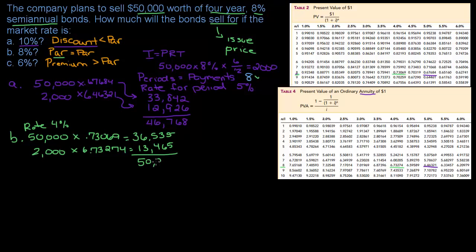Multiplying $2,000 by 6.73274 gives $13,465. Adding $36,535 plus $13,465 equals $50,000 — exactly par. Here's an important tip: if you're expecting a discount or premium but calculate $50,000, you probably used the contract rate in the table instead of the market rate. If you get $50,000, it means market rate equals contract rate. Always go through and determine what you expect first — if you expected a discount and got $50,000, check your rate.